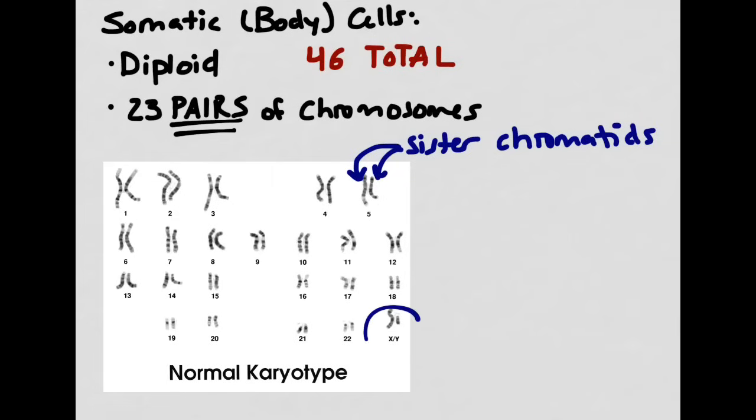Now, notice that this last pair, the 23rd pair, has two that look pretty different from one another, which is different than any of the other preceding pairs. This is because the last set of chromosomes, the XX chromosome, or the X and the Y chromosome, determine the person's gender.